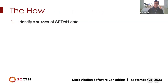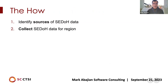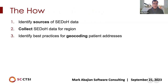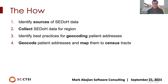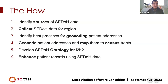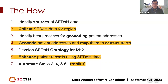So how do we do this? We identify sources of CEDO data — we've identified seven or eight different sources. We collect CEDO data, about 38 different measures for each census tract in the country. We identify the best practices for geocoding our patient addresses, geocode those addresses and map them to census tracts. Then we develop the CEDO ontology for I2B2 to make this data available through the I2B2 interface to our researchers. We enhance the patient records using the CEDO data, making it available for cohort discovery. The last step was to automate steps two, four, and six — and that gives us our toolkit.